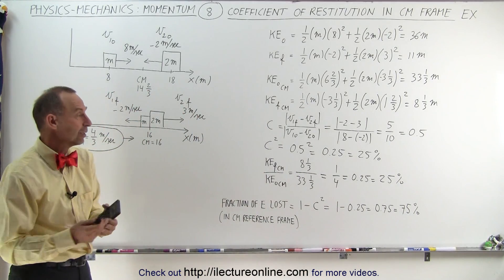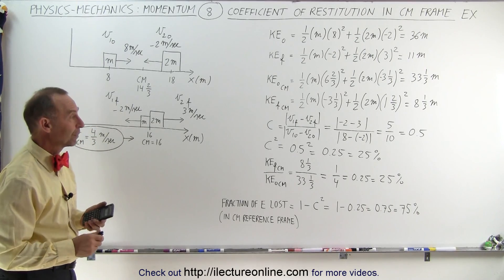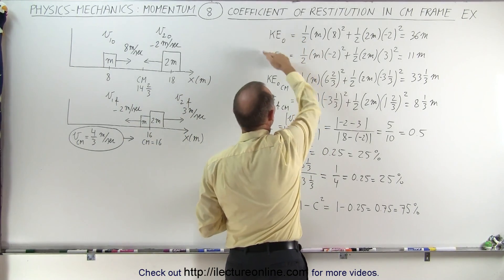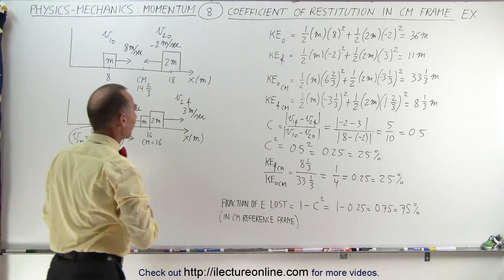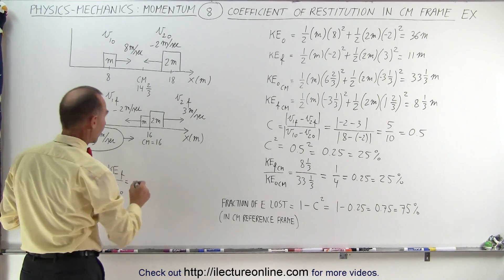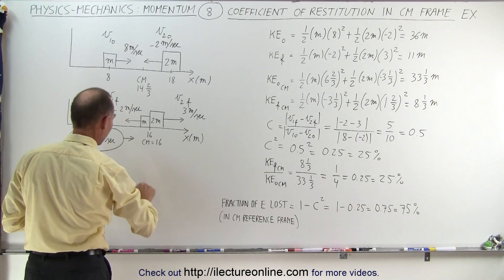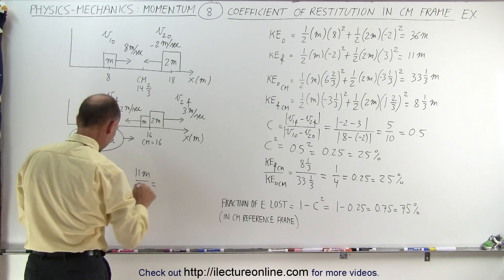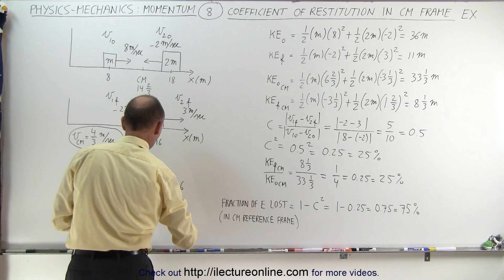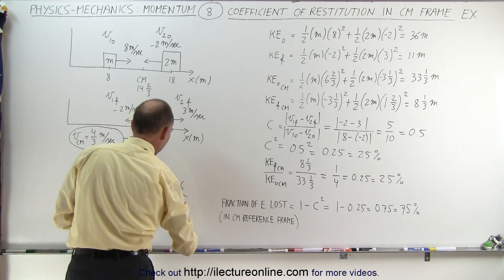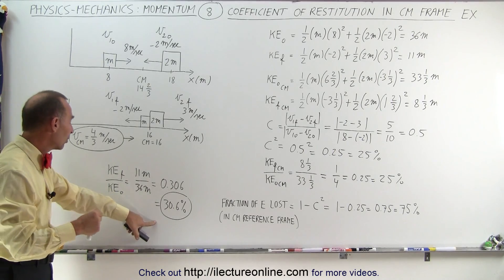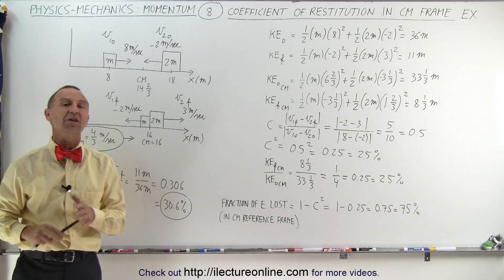This should give you a good understanding of the coefficient of restitution. One last thing: let's calculate the energy ratio in the Earth reference frame. Taking kinetic energy final divided by kinetic energy initial — 11m divided by 36m — equals 0.306, or 30.6%. So relative to the fixed Earth reference frame, 30.6% of the energy was retained and a little less than 70% of the energy was lost. And that's how it's done.